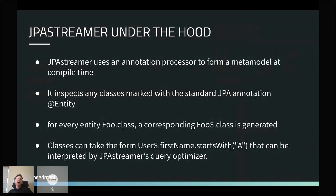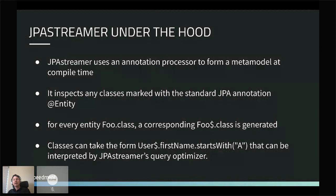How is this possible? JPA Streamer uses an annotation processor to form a metadata model. The metadata model is the class with a dollar sign at the end. It sees all the entities on your classpath and generates a corresponding metadata class for each entity type. All columns have predicates available, and depending on the column type — integer vs. string, for example — you get different kinds of predicates. These predicates can all be used by the JPA Streamer query optimizer.